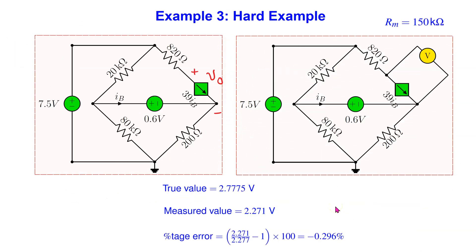Finally, we consider a hard example. Consider the bridge circuit as shown. We are interested in measuring the voltage drop across the current controlled current source. In this problem the meter resistance is directly given. We can use any circuit analysis technique to show that the true value is 2.7775 volts. We can then replace the voltmeter by its meter resistance and reanalyze the circuit to obtain the measured value.